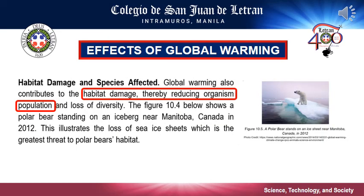Lastly, habitat damage and species affected. Global warming also contributes to habitat damage, thereby reducing organism population and loss of diversity. The effects of global warming on Earth's ecosystem are expected to be profound and widespread. Many species of plants and animals are already moving their range northward or to higher altitudes as a result of warming temperatures. The figure illustrates a polar bear standing on an iceberg near Manitoba, Canada, showing the loss of sea ice sheets, which is the greatest threat to polar bears' habitat.